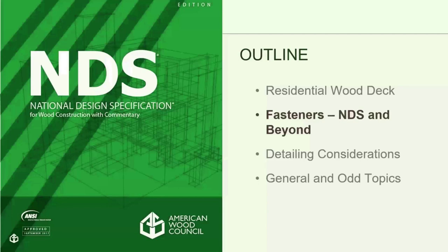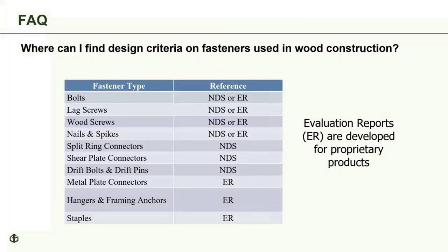Now we'll move on to fasteners — both what you find in the NDS and in other locations. This table shows which fastener types are covered in the NDS versus those covered by national evaluation reports, also called evaluation service reports. Evaluation reports are developed for proprietary products. If specifying fasteners based on NDS values, bolts, lag screws, and wood screws must conform to applicable ANSI/ASME standards referenced in NDS sections 11.1.2, 11.1.3, and 11.1.4. Nails and spikes must meet ASTM requirements specified in NDS 11.1.5.